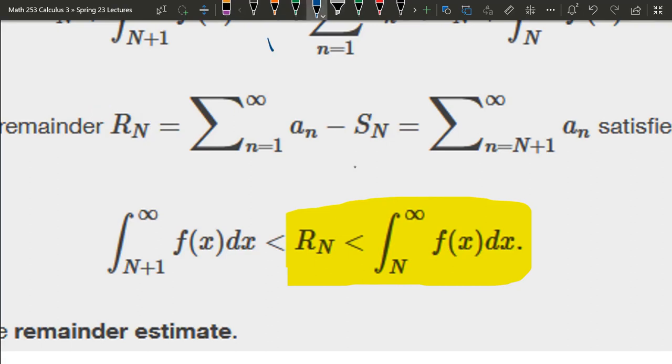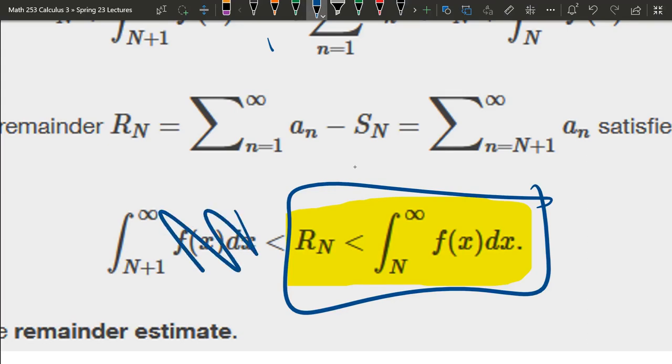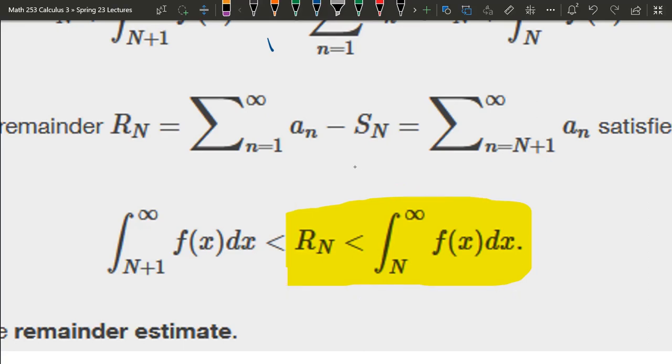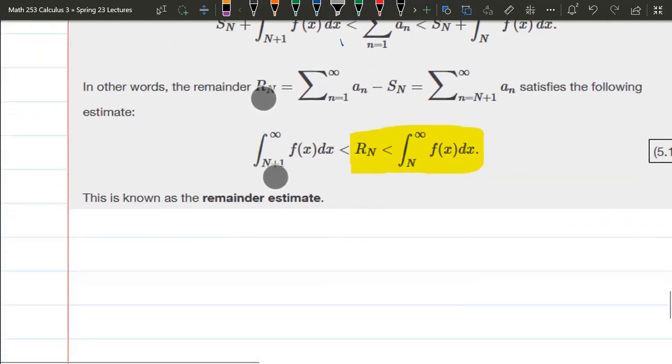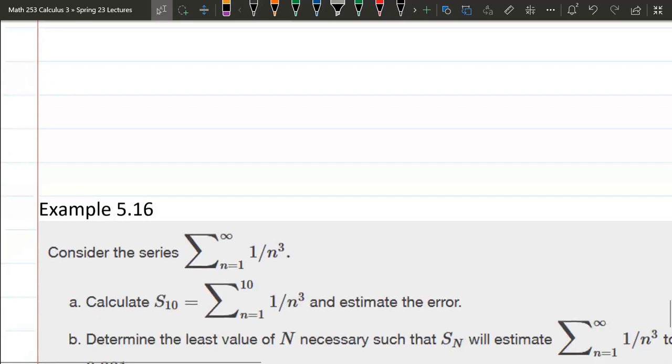We compute it, we don't get an equality, but we get an estimate for the error. Now there's a lower and an upper bound. The lower bound doesn't matter, so this one's not really useful, so ignore that. The upper bound's the one that's useful, so I highlighted it. Okay, so let's go ahead and use this on some examples.